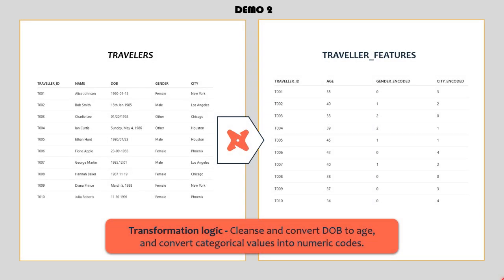Let's take another example. Imagine you're working on a machine learning project and your task is to build a feature table from a raw travelers table. What exactly a feature table is or what feature engineering means is outside the scope of this video, but I've added a link in the description that explains the basics of machine learning and feature engineering. At a high level, ML models perform best when the input data is numeric and clean. So during feature engineering, we typically cleanse any messy data and convert non-numeric data into numerical form.